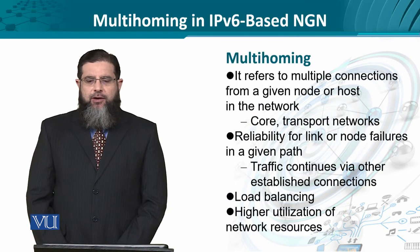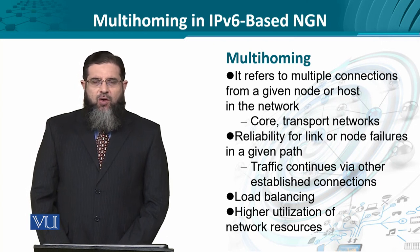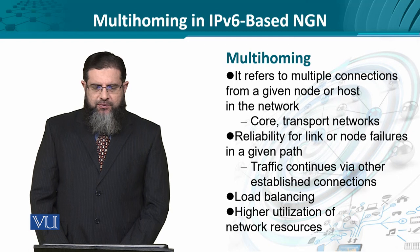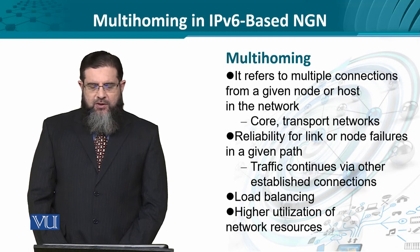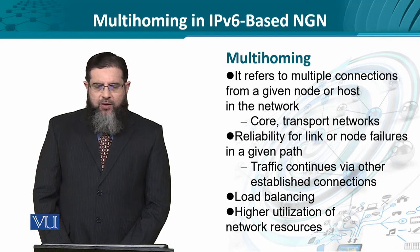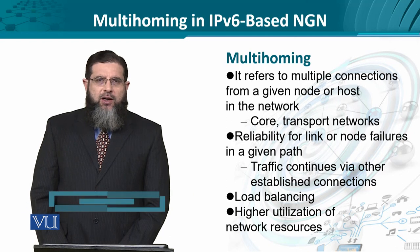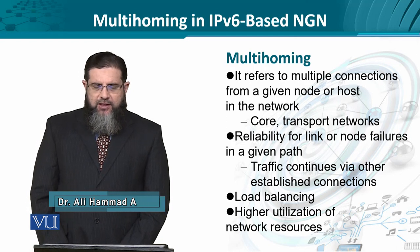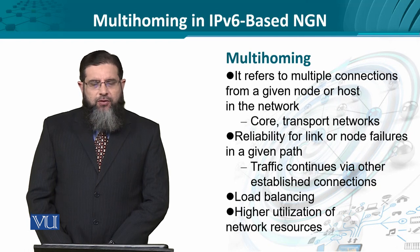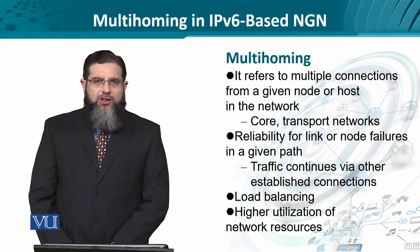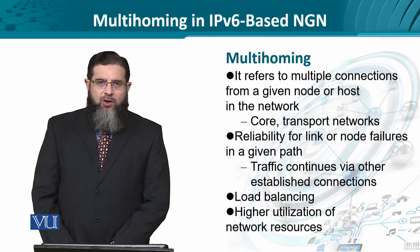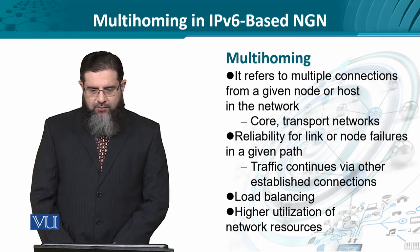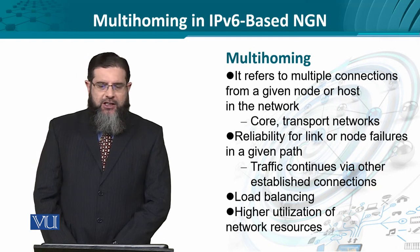Multihoming actually refers to having multiple connections from a given host, node, site, or location to the network. This could involve multi-connections to a single access network, core network, or transport networks. The reliability impact of link or node failures in a given path can be significantly reduced because we will have a failover. Once we have a failover link, it could also be utilized to achieve load sharing and higher utilization of network resources.